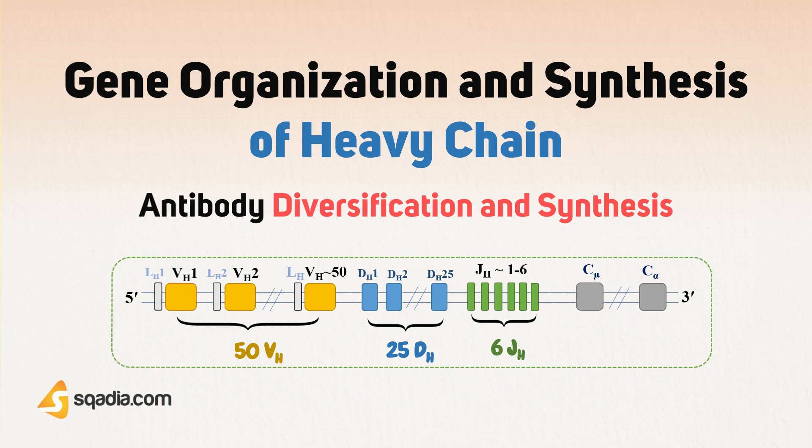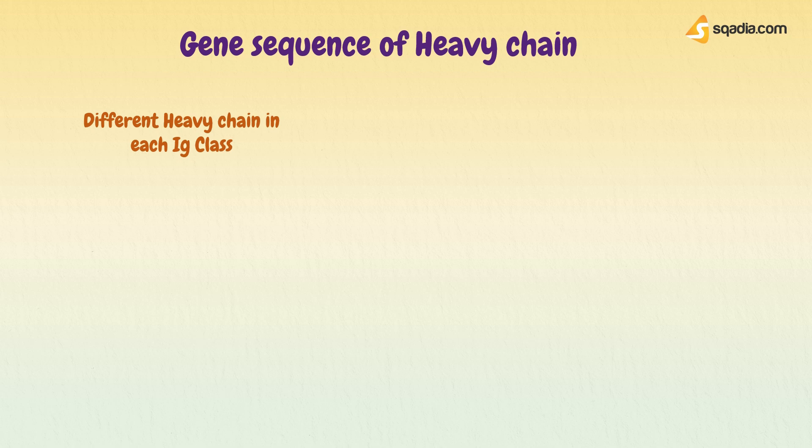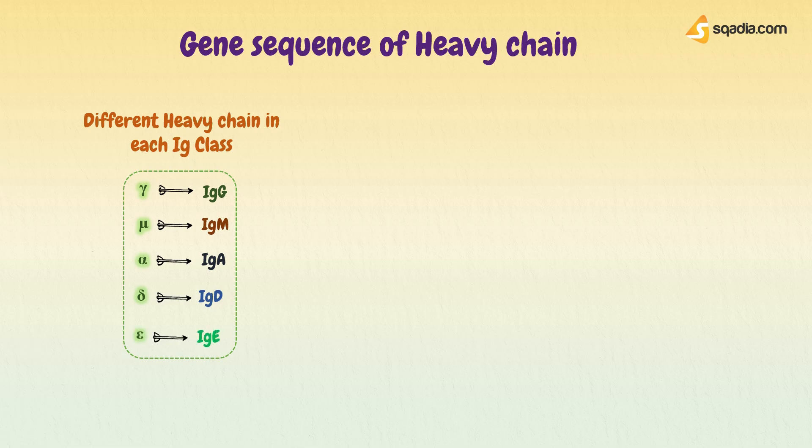To better understand antibody diversity, we need to understand its genetic sequence first. As for heavy chain, we know that each class of immunoglobulin exhibits different types of heavy chain: mu for IgM, gamma for IgG, alpha for IgA, delta for IgD, and epsilon for IgE.